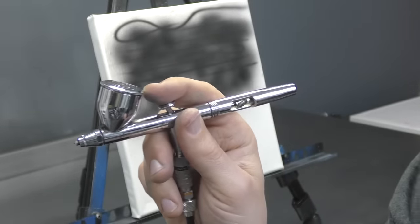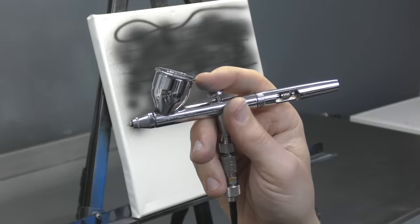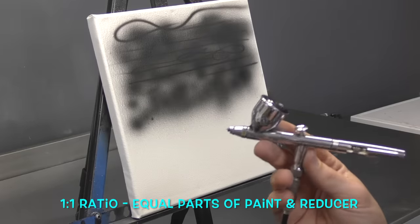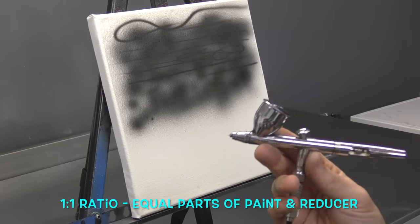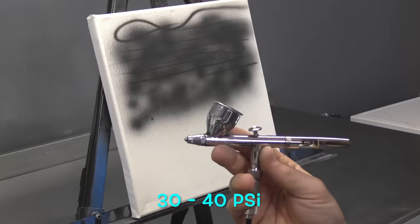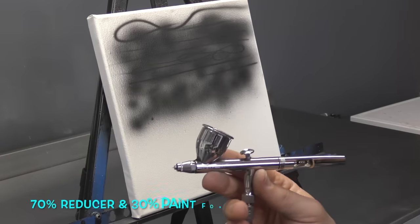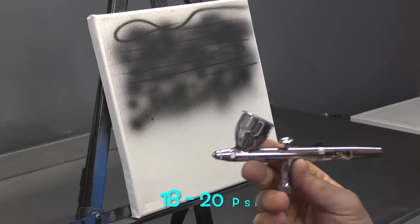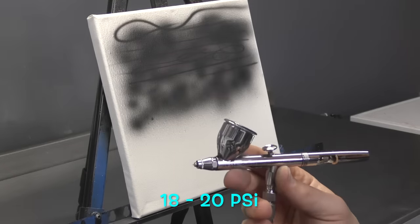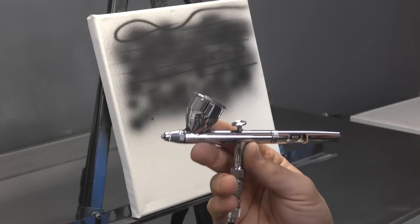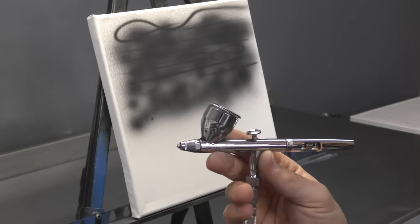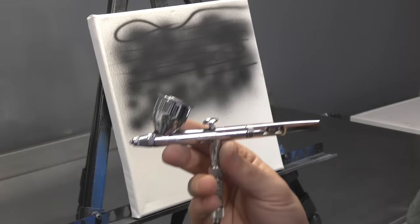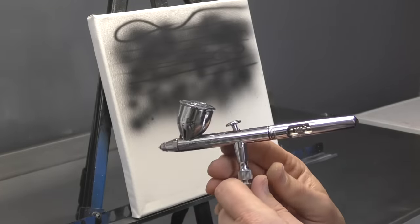The other thing you can do to minimize tip drying is to add reducer to your paint. I recommend to my students a one-to-one ratio—equal parts reducer and paint—running at 30 to 40 PSI on your compressor. For detailed work, I run at 70% reducer, 30% paint at about 18 to 20 PSI for finer detailing with the 0.18mm needle nozzle setups.